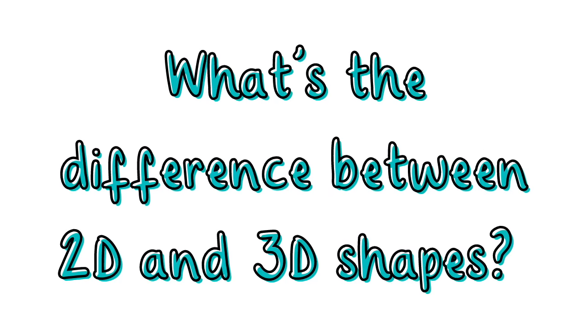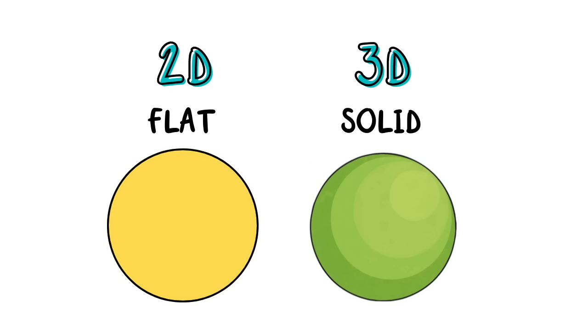What's the difference between 2D and 3D shapes? One of the easiest ways to understand the difference between 2D and 3D shapes is by identifying how 2D shapes are flat and 3D shapes are solid.